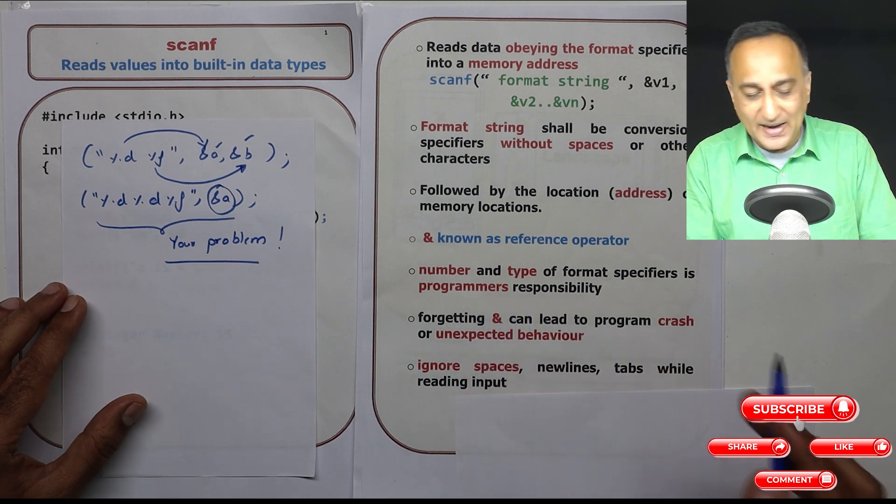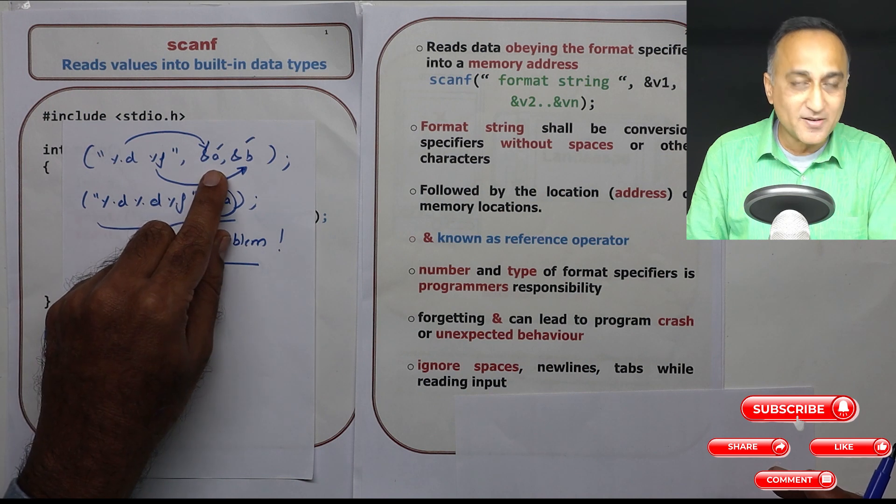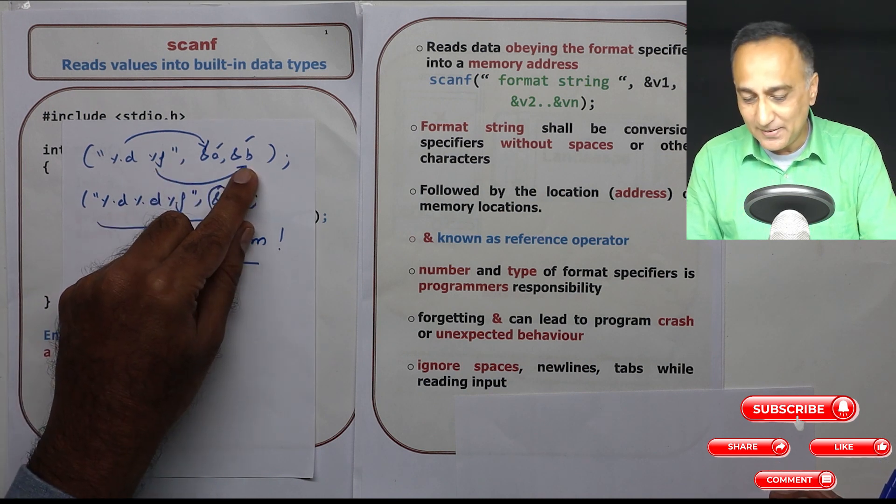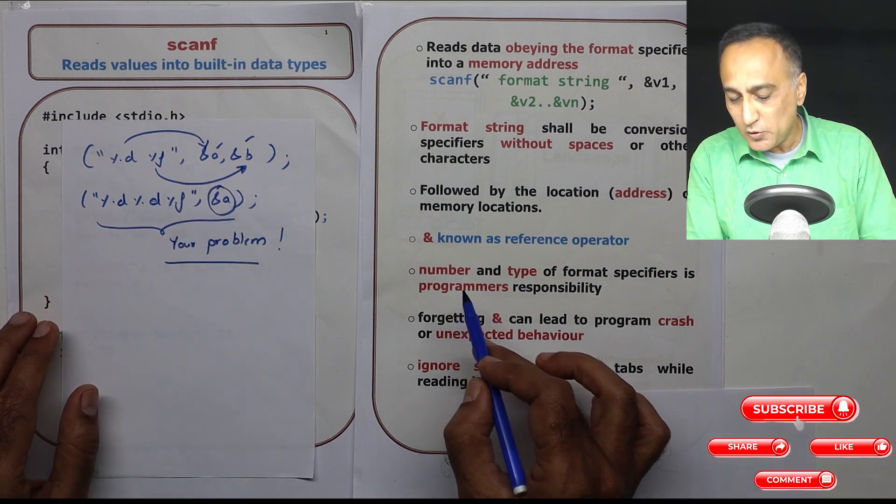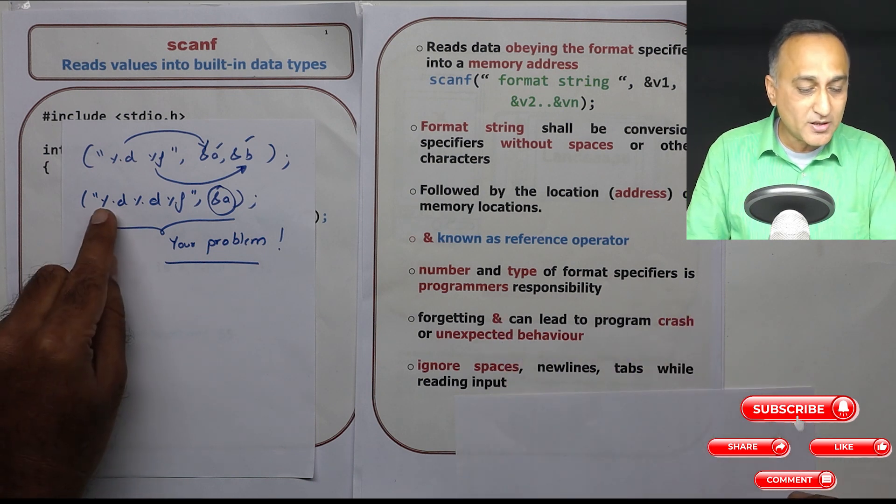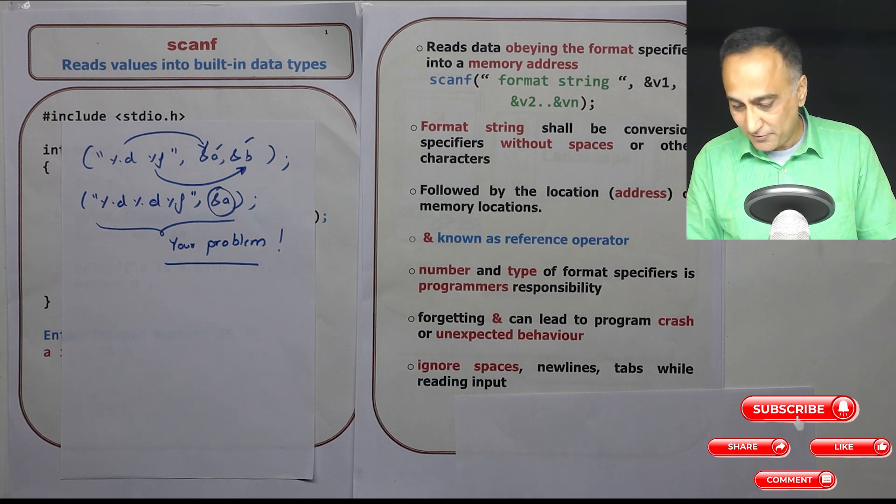So the number and the type - you cannot say %f and have a here. You cannot have %d and have b here because b is a real type of number. So it is the responsibility of the programmer to have the exact number and type of format specifier. C will not give you an error if you do something like this. It is your job to take care of it.